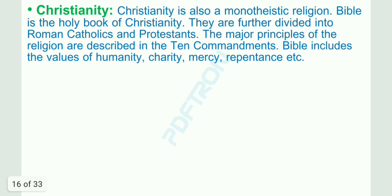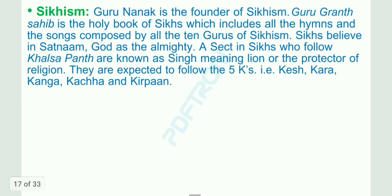Christianity is also a monotheistic religion. The Bible is the holy book of Christianity. Christians are further divided into Roman Catholics and Protestants. The major principles are described in the Ten Commandments. The Bible includes the values of humanity, charity, mercy and repentance. Guru Nanak is the founder of Sikhism. Guru Granth Sahib is the holy book of Sikhs, which includes all the hymns and songs composed by all ten gurus of Sikhism. Sikhs believe in Satnam — God is the almighty. The Khalsa Panth sect, known as Singh meaning lion or the protector of religion, are expected to follow the five Ks: Kesh, Kara, Kanga, Kaccha and Kirpan.